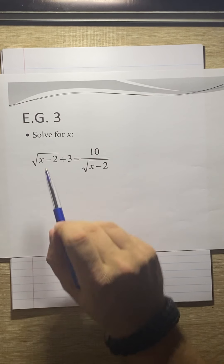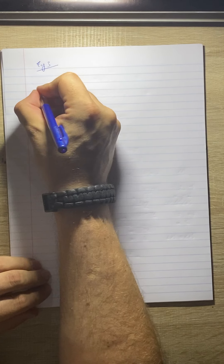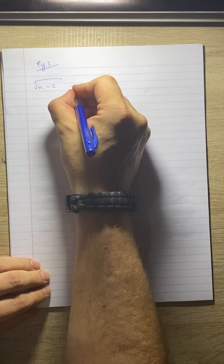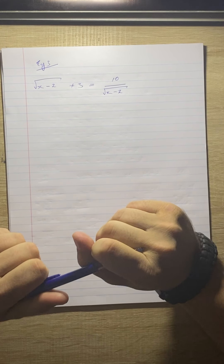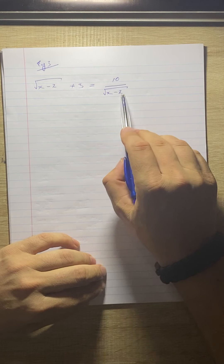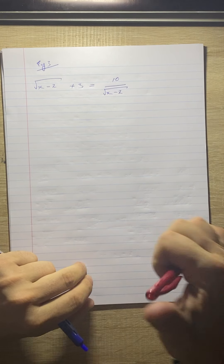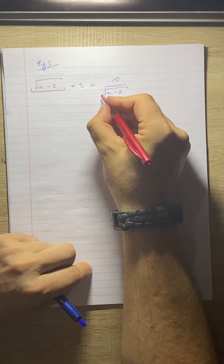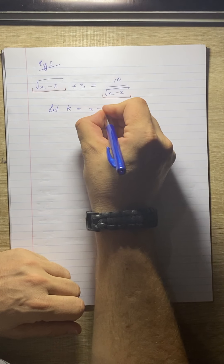Let's go through example 3. Solve for x: the square root of x minus 2 plus 3 equals 10 over the square root of x minus 2. What I'm going to do here is use the substitution method, or k method, because I need to get rid of this denominator and multiplying through would be a bit hectic. Notice that this entire thing — that square root of x minus 2 — repeats over here.